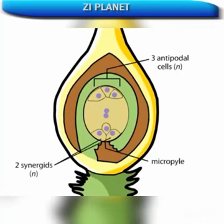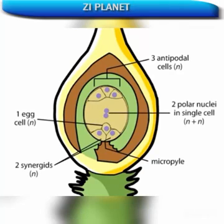Two are called synergids and the other is the egg. Finally, two nuclei called polar nuclei remain together in one large central cell. The egg cell and the single cell with two polar nuclei will eventually take part in a double fertilization event.